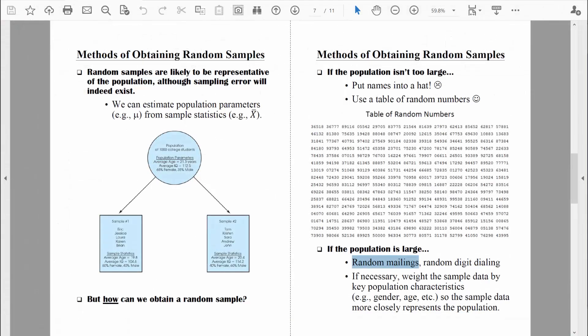Instead of connecting with a random sample via the mail, some researchers want to connect with a random sample via the telephone. In that case, they might use random digit dialing.